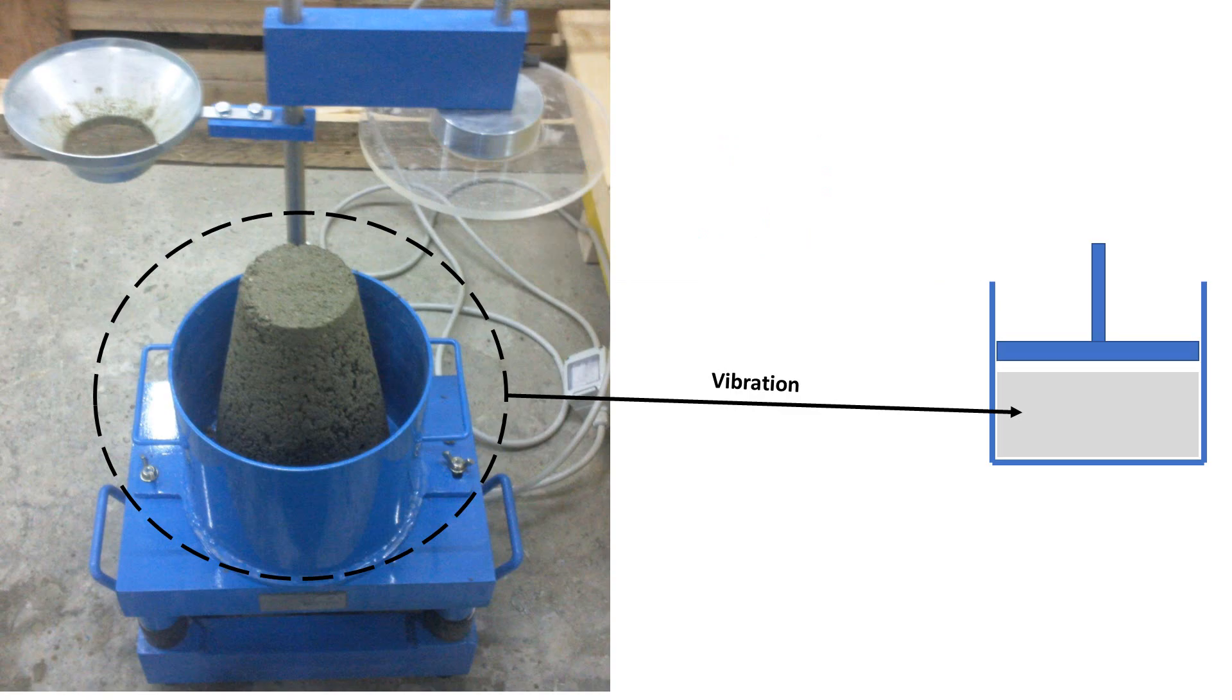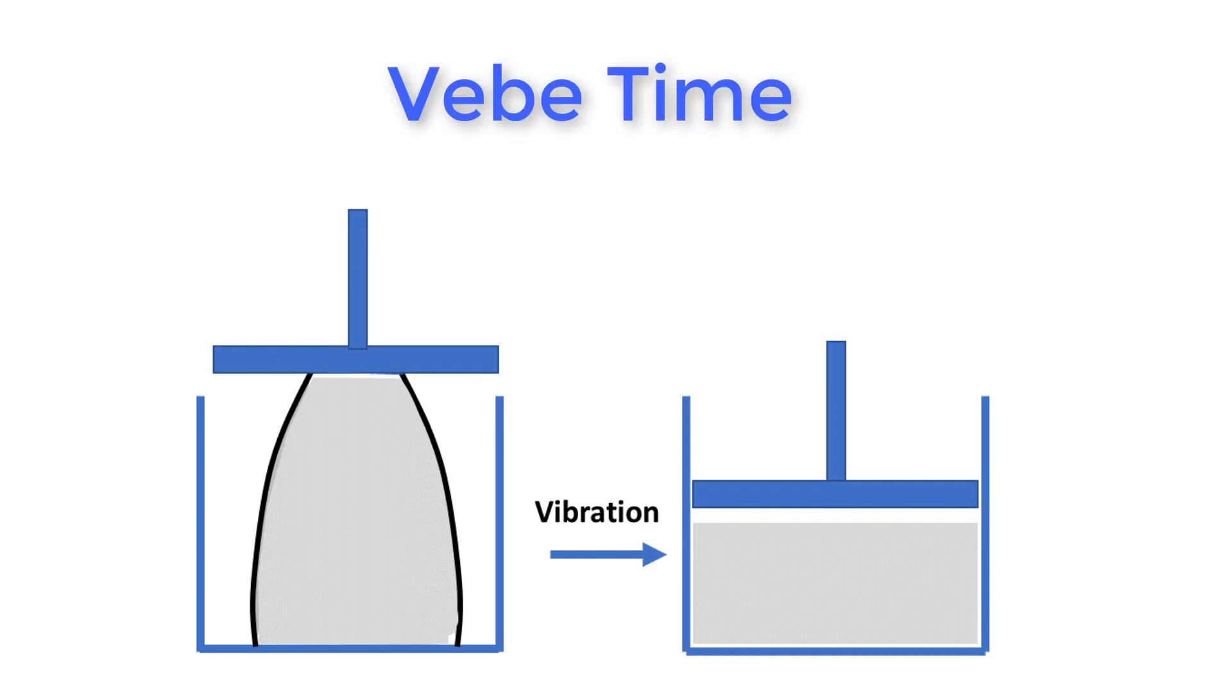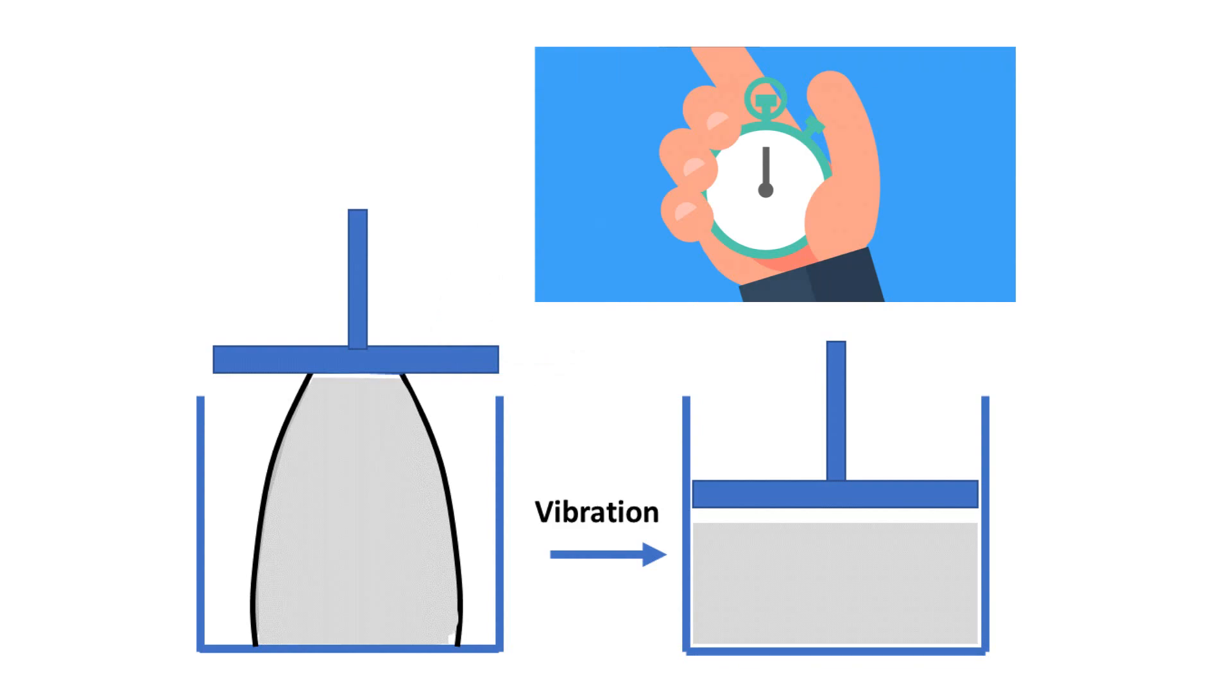The next step is to record the time required to change the concrete from a conical shape to a cylindrical shape. You need to carefully observe the plastic disc on top of concrete. Once the concrete has transferred to the cylindrical shape and covered the plastic disc completely, record the time from the stopwatch.